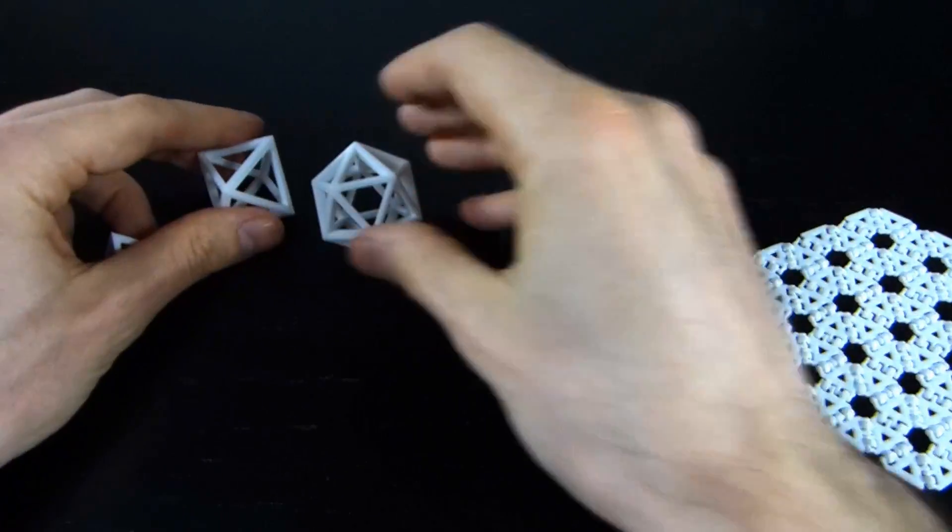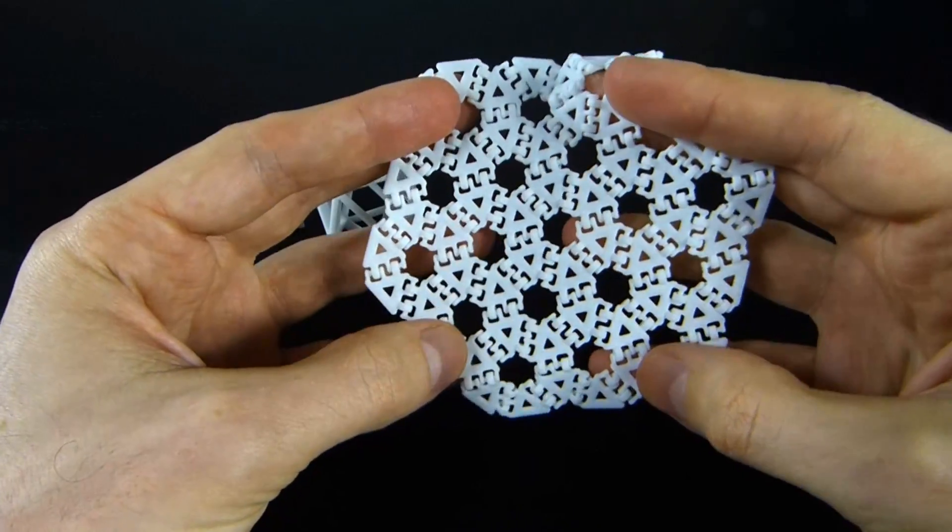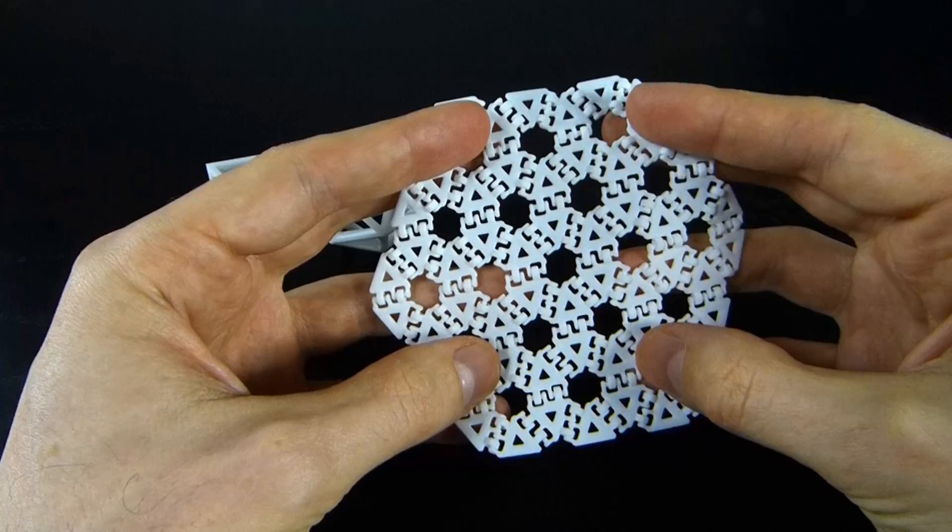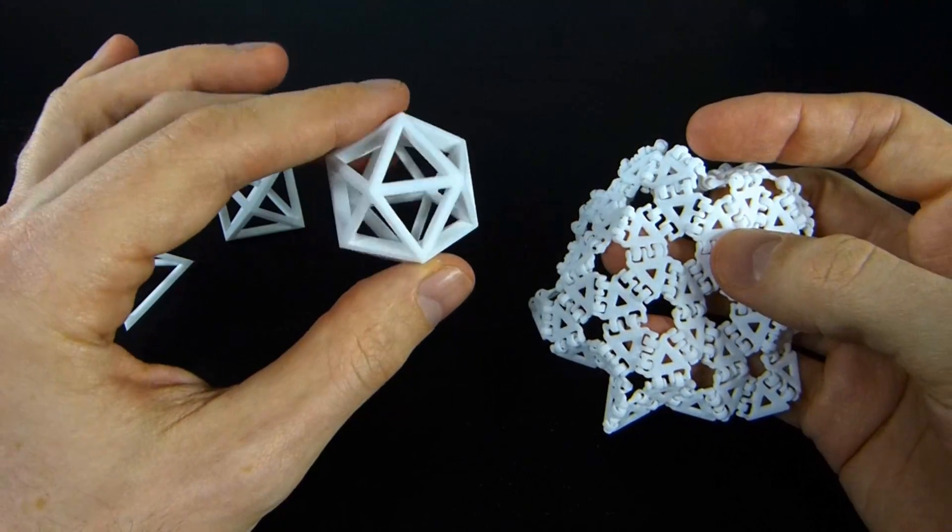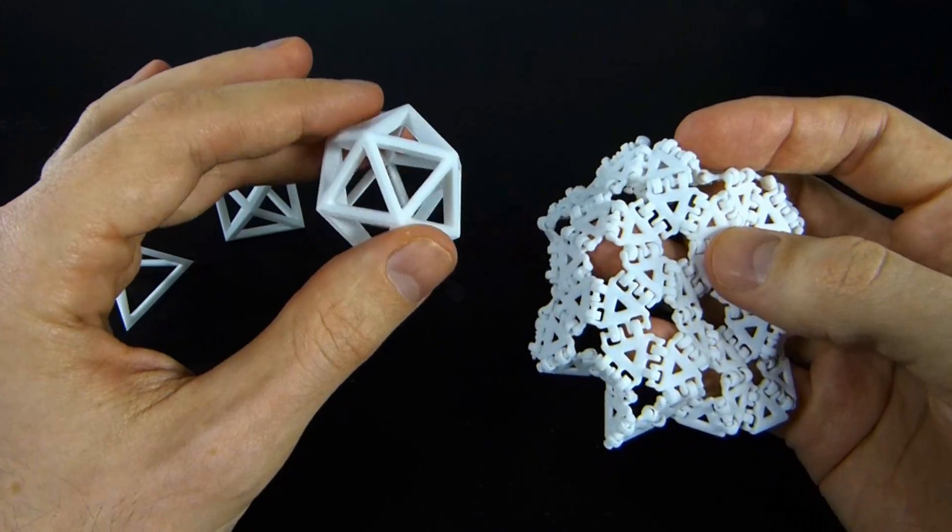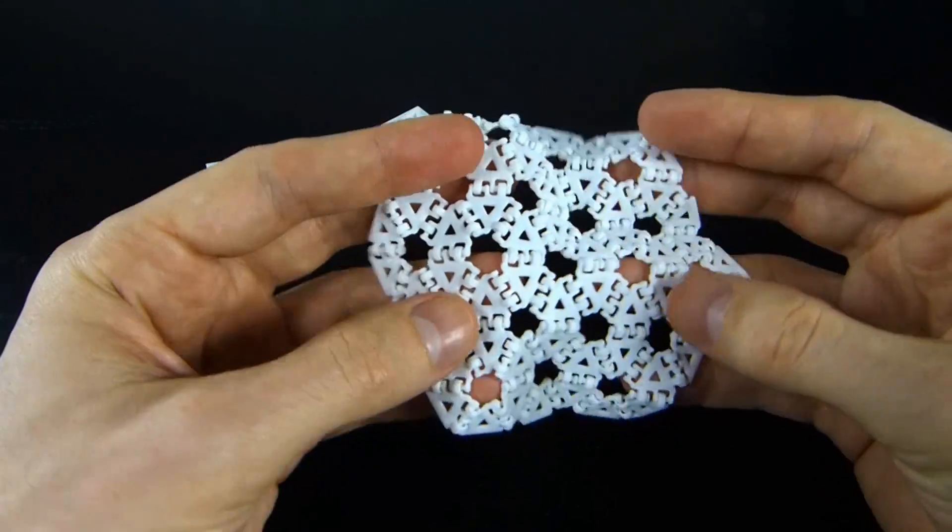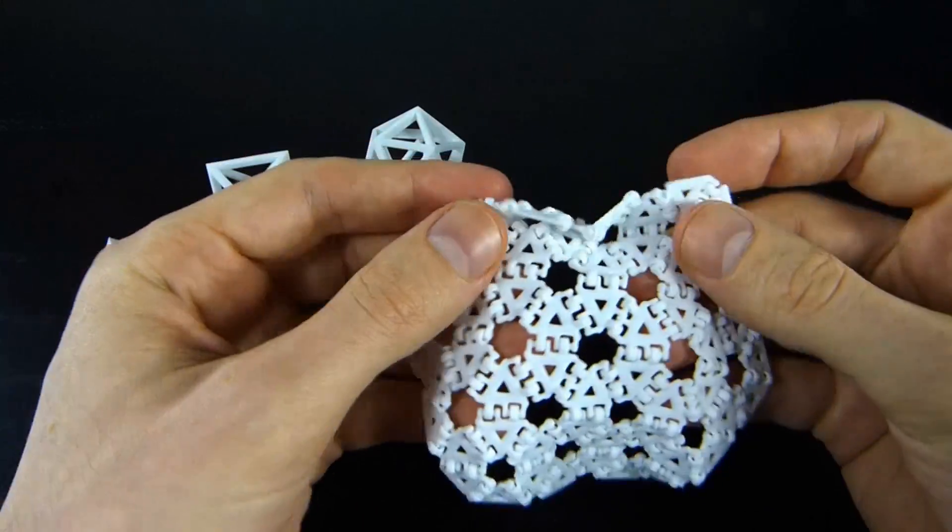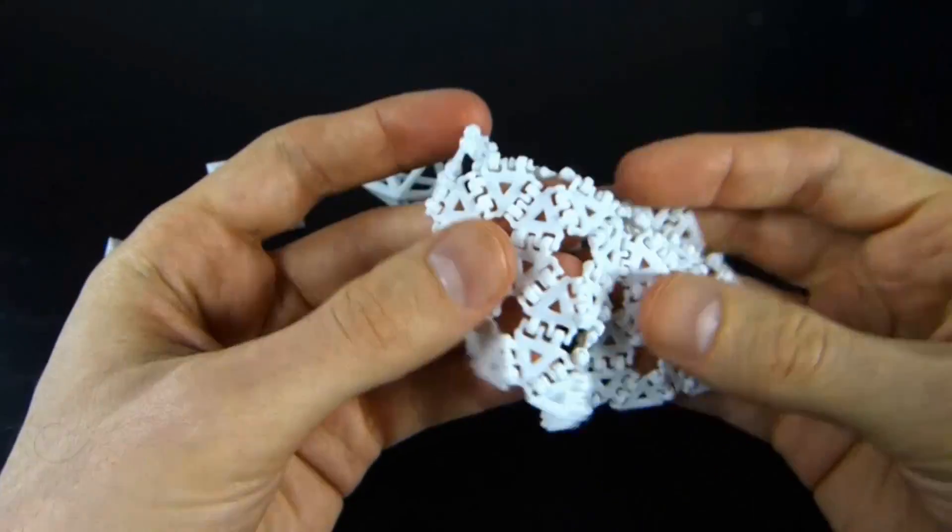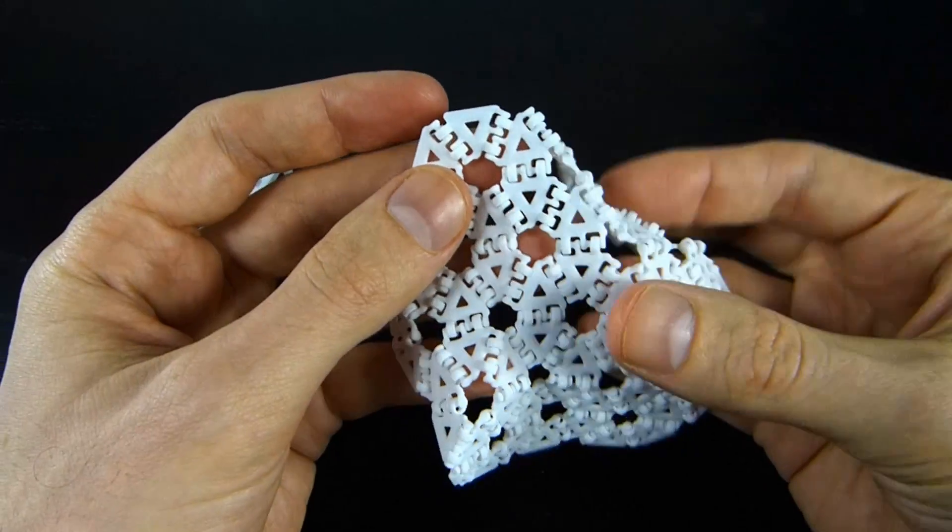And so, obviously you can keep going. This is what you get with six triangles around each vertex. And of course it goes on forever. It's a tiling of the plane rather than these, which you can think of as tilings of the sphere. They close around after some finite number of triangles and you're done. With this you go on forever. And I've only printed a small amount of this. I made it hinged because it's sort of interesting and you can see how it flexes and moves. It's very fabric-like.